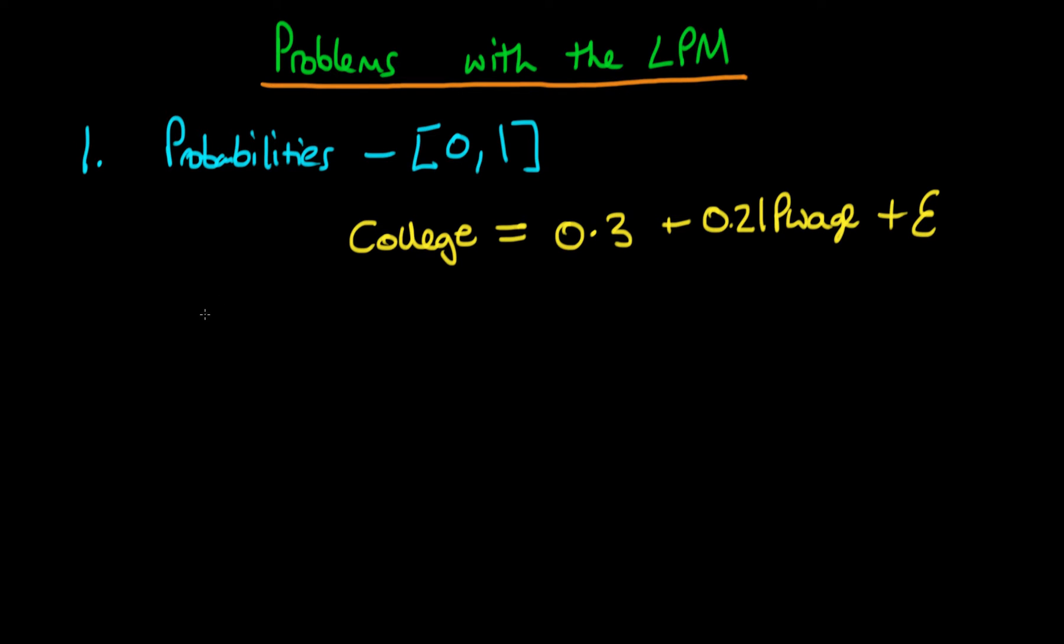We know from the discussion in the previous videos that what this really implies is that the probability that an individual goes to college, so that's the probability that college equals 1, given that we have the log of their parental wage is equal to 0.3 plus 0.2 times the log of their parental wage, because when I take the expectation of this error term epsilon it disappears.